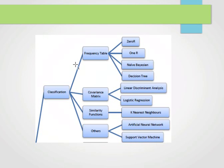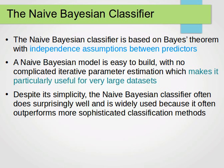The Naive Bayes classifier, as we mentioned before, is based on the frequency table. It is based on Bayes' theorem with independence assumptions between predictors. I hope you're familiar with Bayes' theorem — it's quite a nice way of explaining how things work.